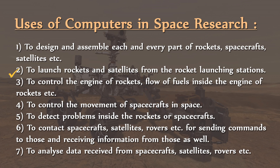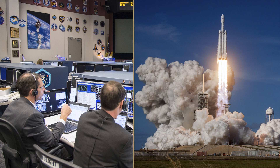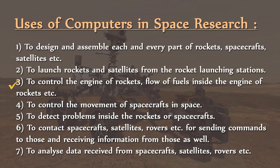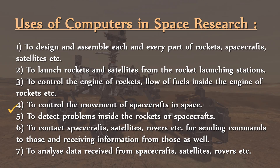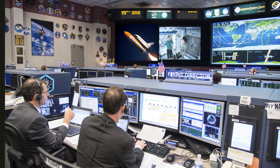Number two, to launch rockets and satellites. At rocket launching stations, computers are used to launch rockets and satellites. Number three, to control the engine of rockets and flow of fuels inside the engine. At rocket launching stations, special computers are used to control the working of the engine and to check the flow of fuels inside the engine of rockets.